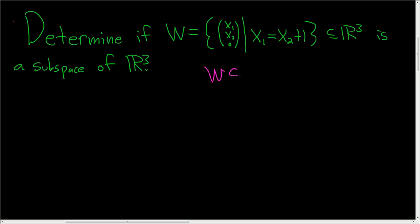So recall that a subset W of a vector space V is a subspace of V if the following three conditions hold. So the first condition is that W is not empty.